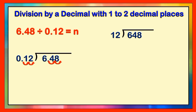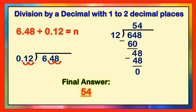The last step is to divide this like a whole number. 6 divided by 12 cannot be done, so we make it 64. 64 divided by 12 gives us 5. 5 times 12 equals 60. Get the difference — the difference is 4. Bring down the next digit, 8, to form the new number 48. 48 divided by 12 gives us 4. Then we get the product of 4 and 12, which equals 48. Subtract — we get 0. Therefore, the final answer is 54.